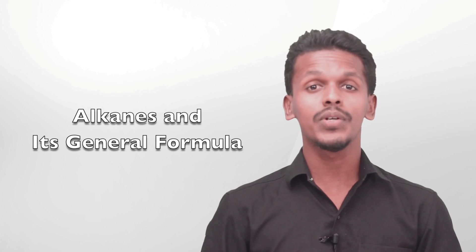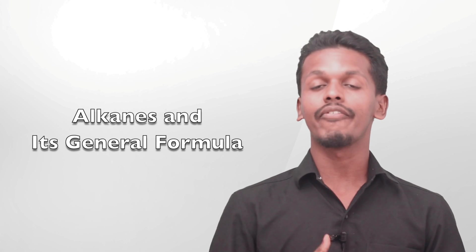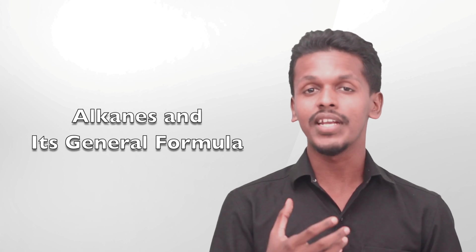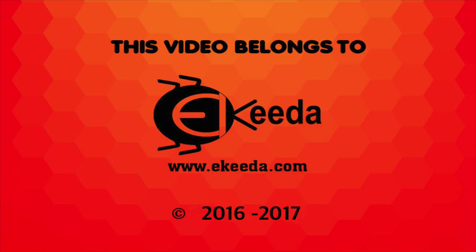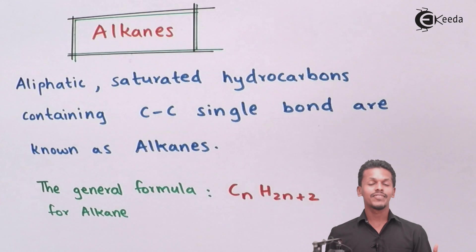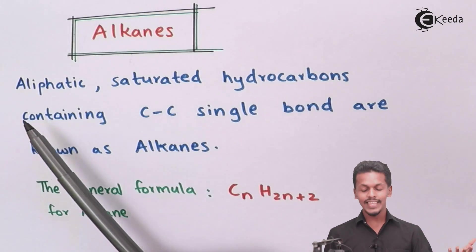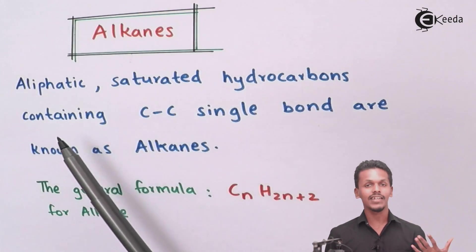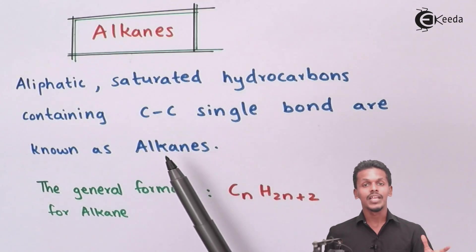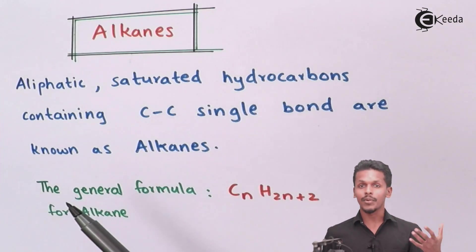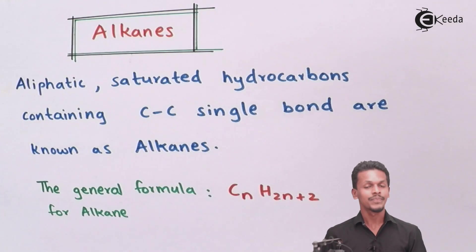Hello friends. Now we are going to discuss the main chapter on alkane — what is the definition of alkane. Alkane is an aliphatic saturated hydrocarbon in which all carbon-carbon bonds are single bonds.